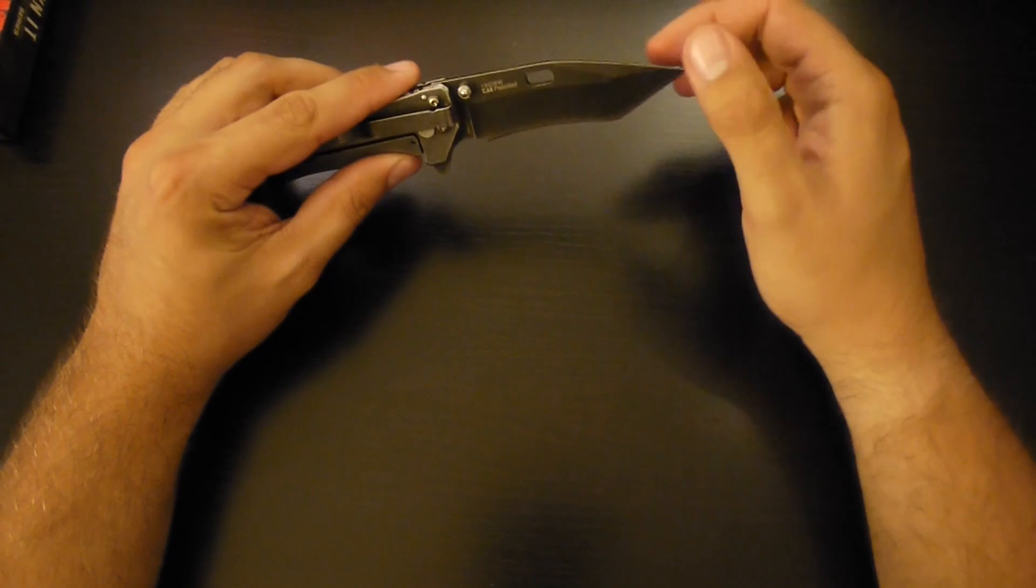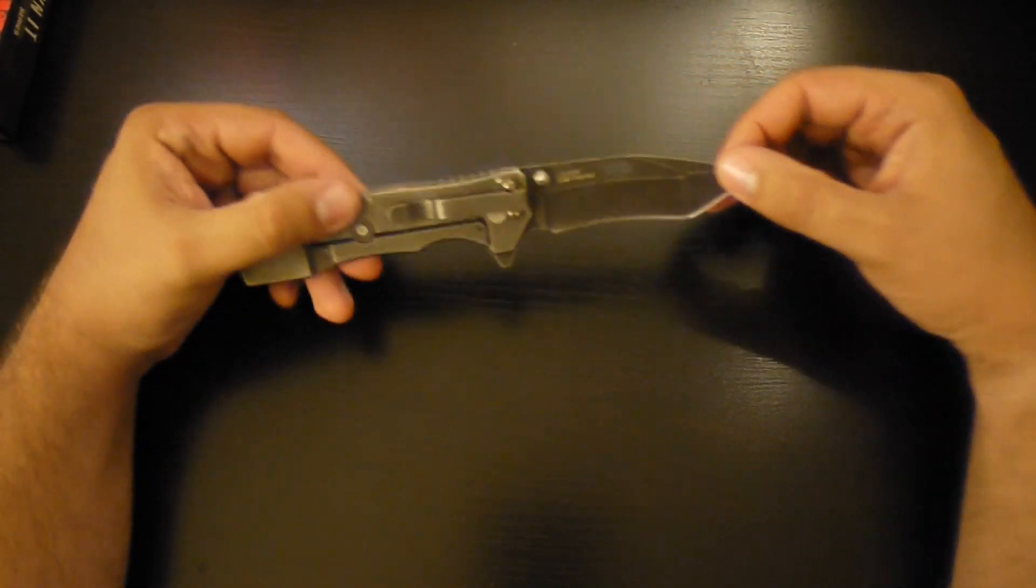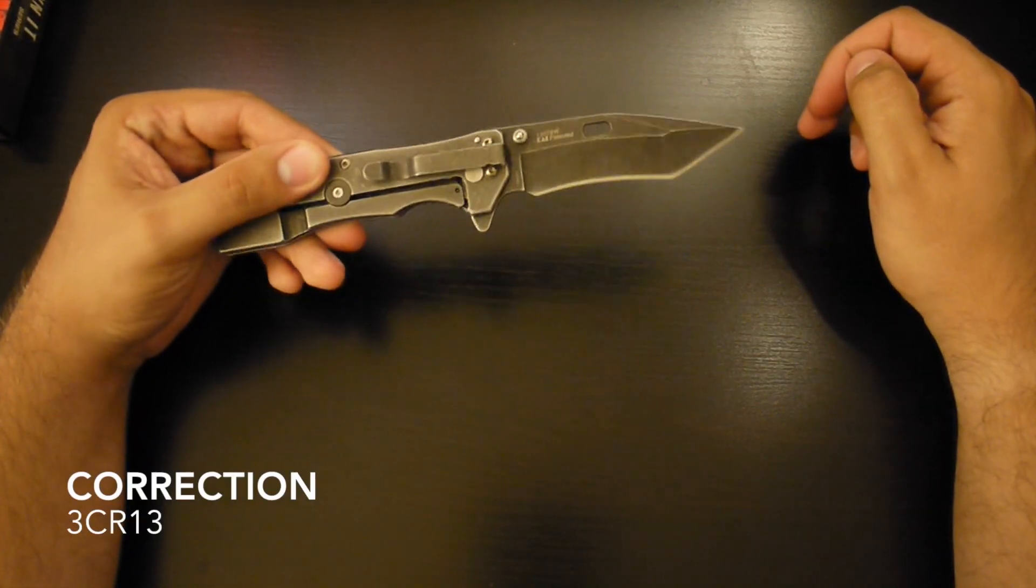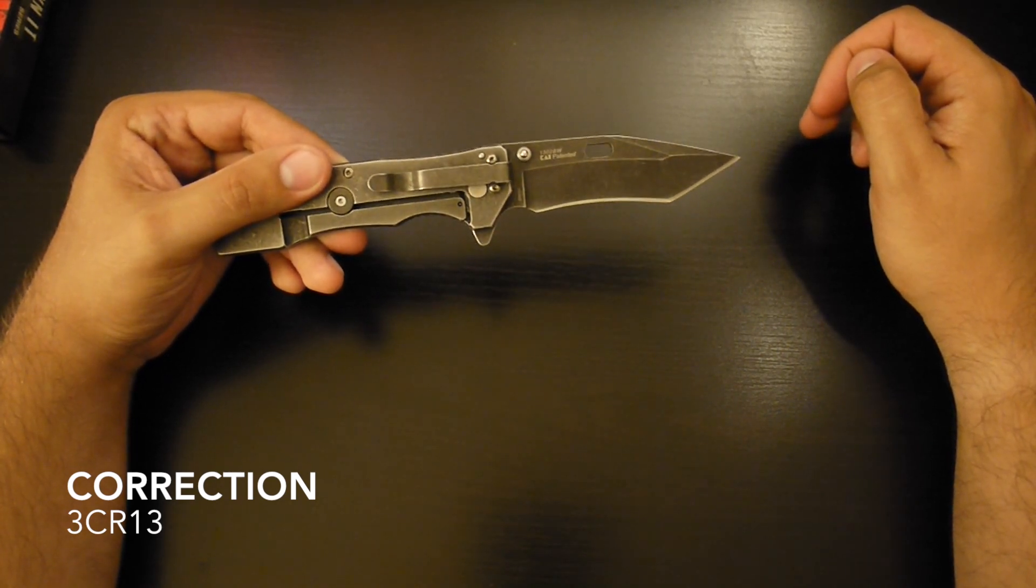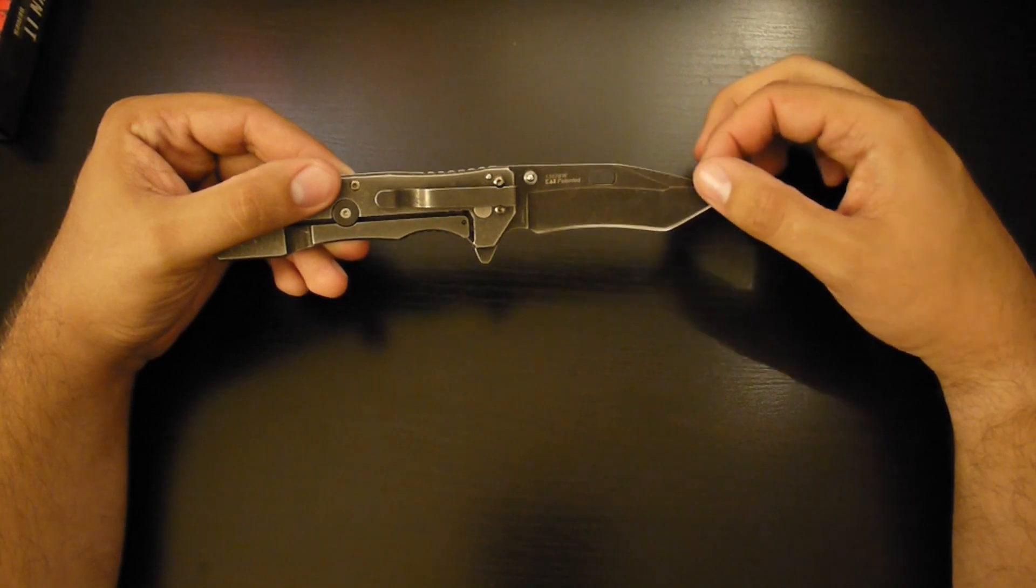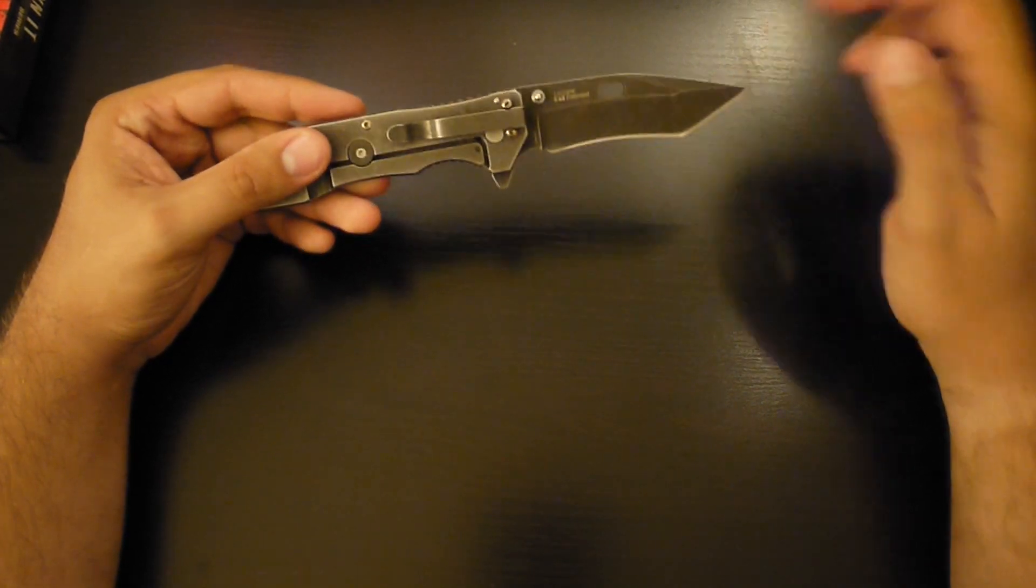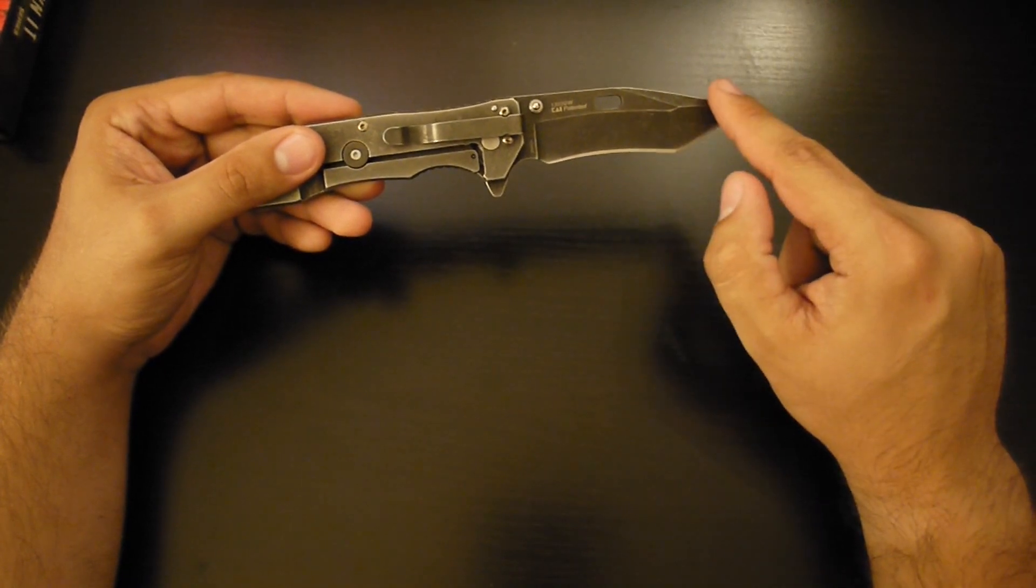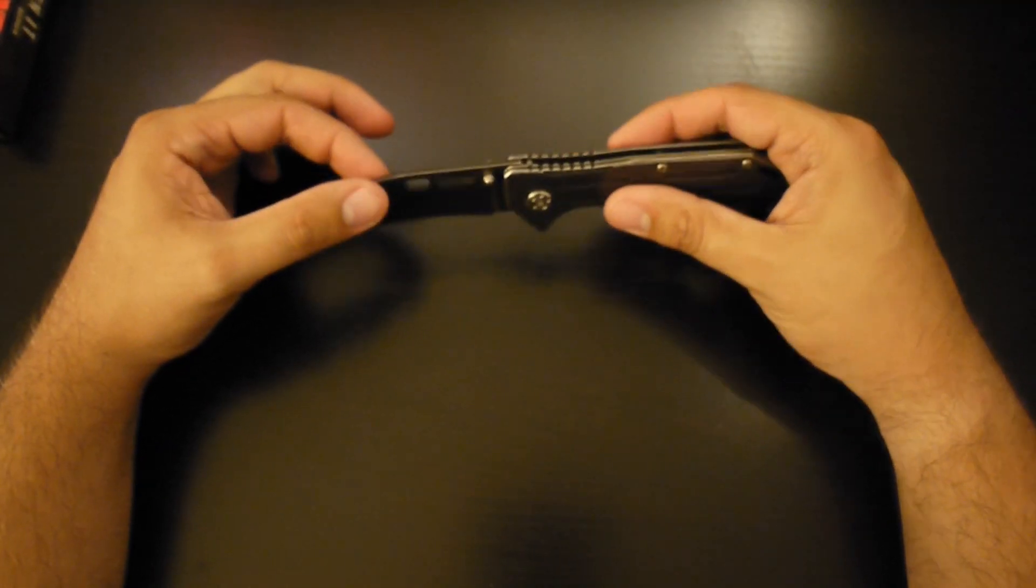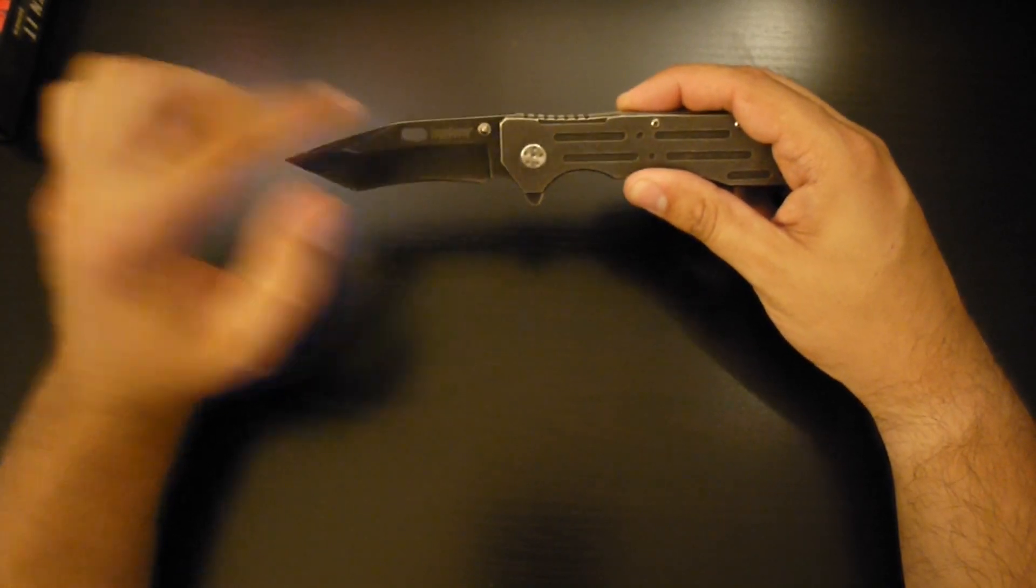The material for the blade is 8CR13, typical blade steel that's used for most Kershaw import knives. It's got a plain edge with this re-curve and a tanto style tip. There's no serrations.